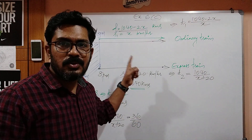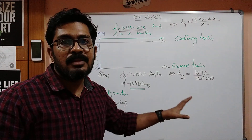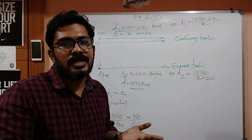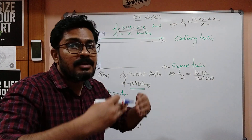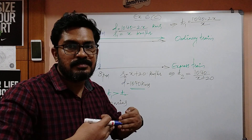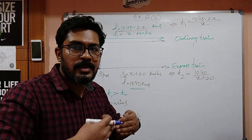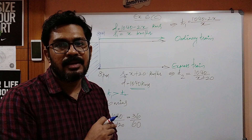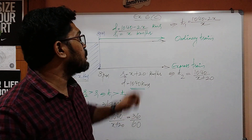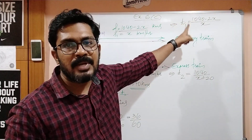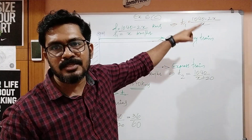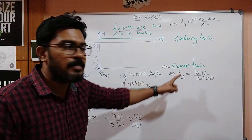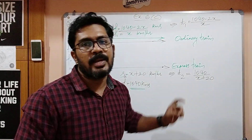If we don't make this adjustment, we are showing partiality toward the local train by giving it a 2-hour advantage. When doing a comparison, the starting point must be the same for both trains. So the time taken by the local train is distance over speed, which is 1040 minus 2x divided by x. The time taken by the express train is 1040 divided by x plus 20.